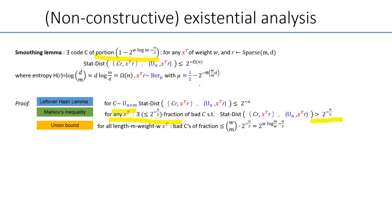Finally, take into account that there are m choose ρ different possibilities for the error vector X. We sum up all the fraction of the bad code, by a union bound.